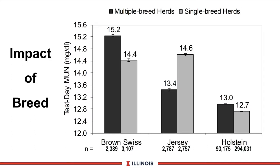Next, let's look at breed impact. Brown Swiss and Jerseys tend to have higher MUN values. It makes some difference whether they're in single-breed or multi-breed herds, but there are clear breed differences to consider depending on what breed you have on the farm. The bottom line is that Brown Swiss and Jersey tend to be higher than Holsteins, though the reason for that is not fully explained.